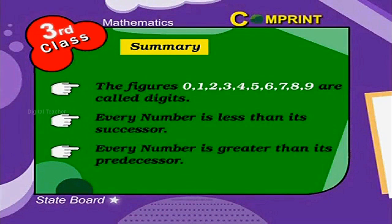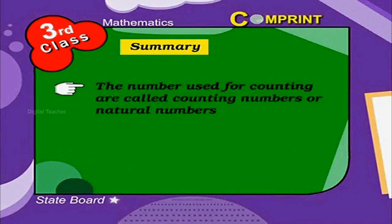Every number is greater than its predecessor. The numbers used for counting are called counting numbers or natural numbers.